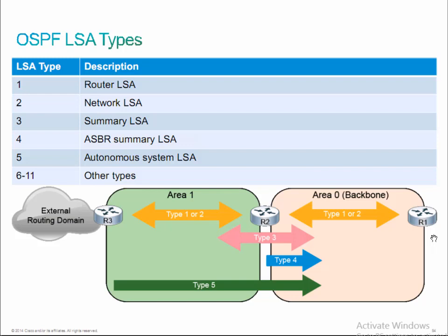Type 10 and type 11 are generic opaque LSAs — literally not very well defined, generic, and potentially used for future expansion of OSPF and new enhancements. So type 1, type 2, type 3, type 4, type 5, and type 7 are really the ones you need to be well-versed in, particularly for the exam. We will also take a look at type 8 and type 9 later on.